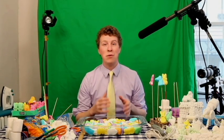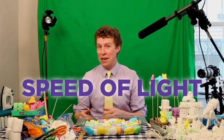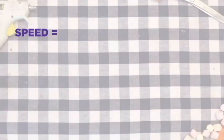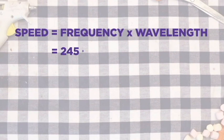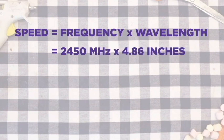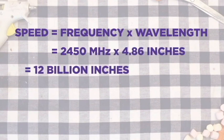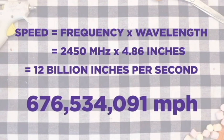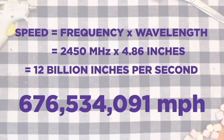So now, to find the speed of the microwaves — which, remember, is the speed of light — I just have to do the math. Frequency times wavelength: 2,450 megahertz times 4.86 inches gives us about 12 billion inches per second, or 676 million miles per hour. And that's pretty close to the actual speed of light.